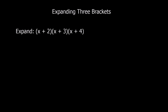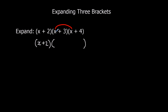The way we're going to expand these brackets is by ignoring the first bracket first of all. I'm going to leave the first bracket exactly as it is and expand the second and third brackets, putting them in another bracket. So we do the first times the first: x times x, which gives me x squared.